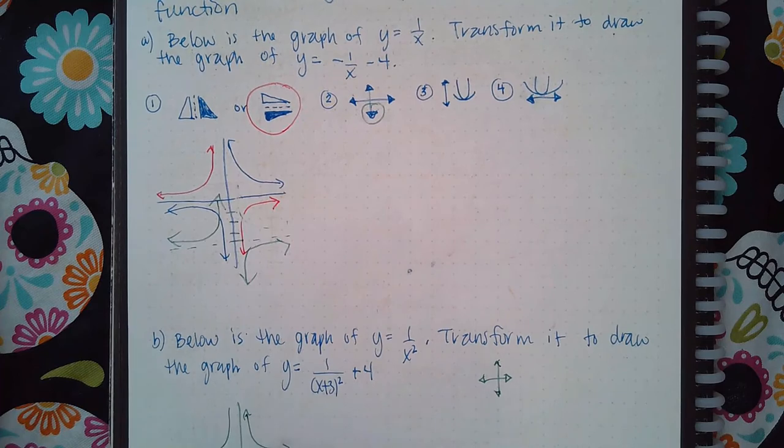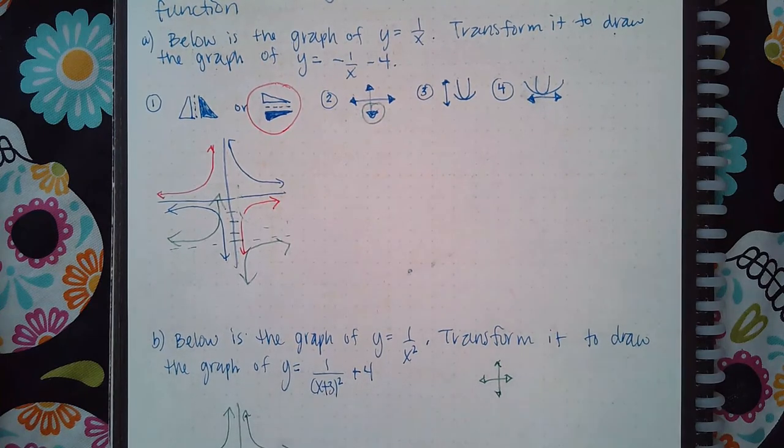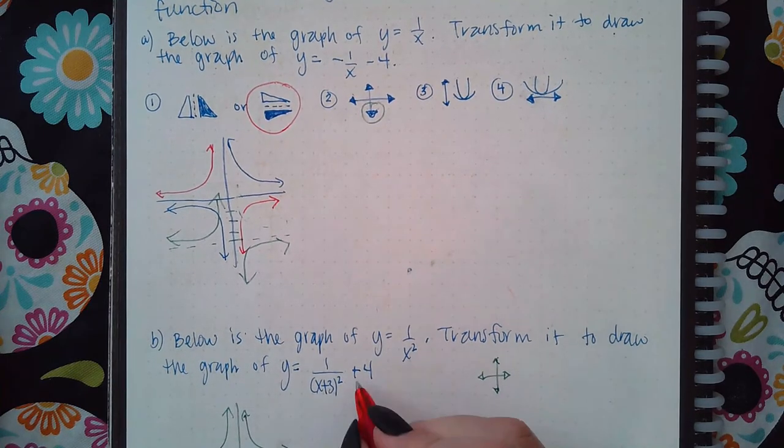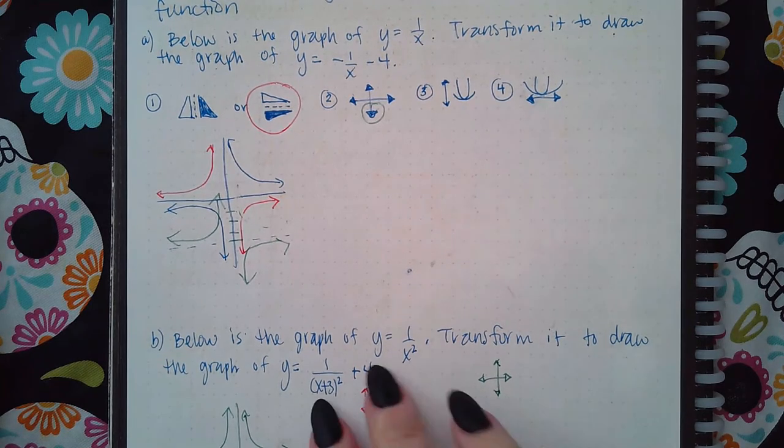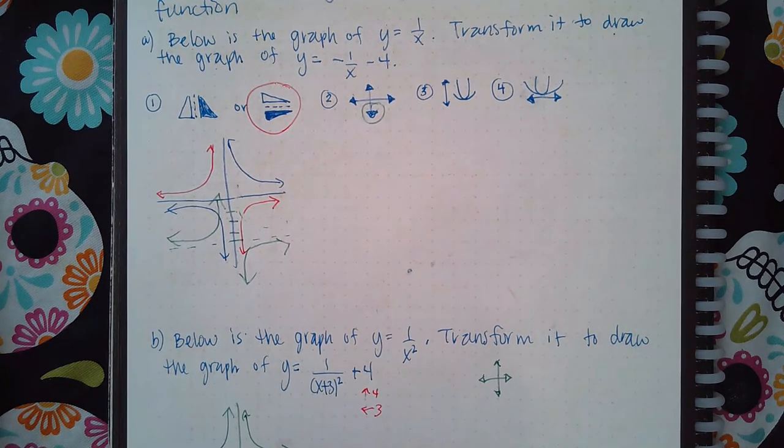It's a squared, so it'll look like that, and then I need to shift it. It looks like I need to go up four and then to the left three based on the transformations there, so the new graph will be...